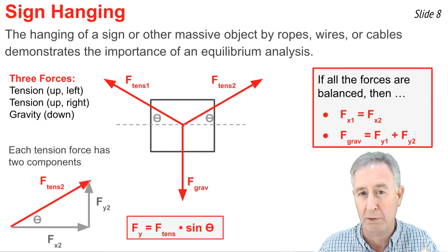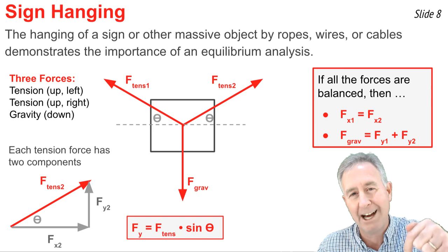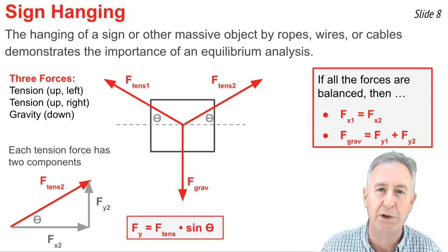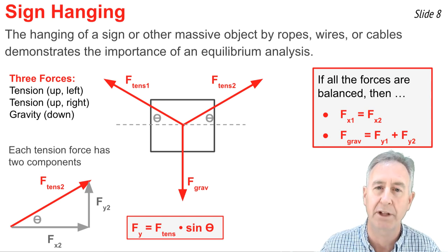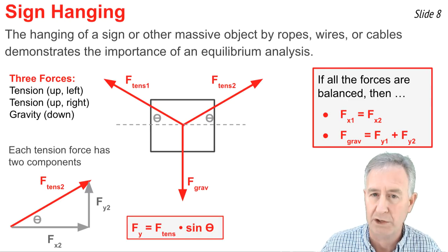There's two up y forces, each being a component of the tension force, and one down vertical force, that being the force of gravity. So I would say something like Fy1 plus Fy2 is equal to that force of gravity.